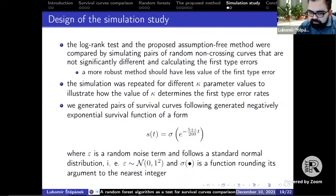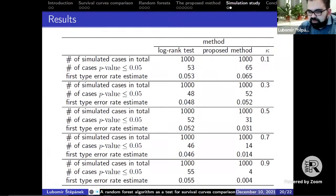Finally we move to simulation studies. The proposed assumption-free method was compared to the log-rank test by simulating pairs of non-crossing curves that are not significantly different and calculating the first type errors, which means when the equivalent curves are detected as different. We assume that the more robust method should have less value of the first type error. We generated many pairs of survival curves following a negative exponential survival function. This is defined below and the simulation was repeated for different κ parameters just to illustrate how the value of κ determines the first type error rates.